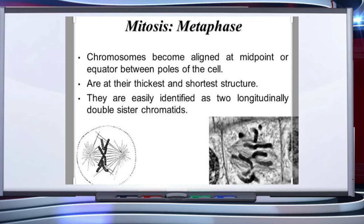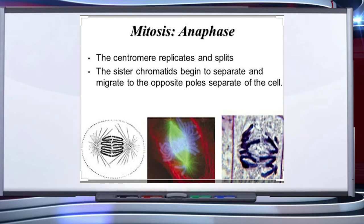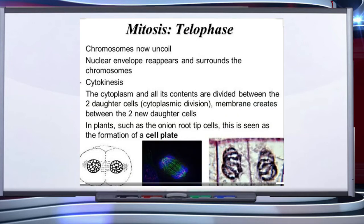Sister chromatids are clearly visible under the microscope. The next phase of mitosis is anaphase. In this phase, the chromosomes split and the sister chromatids begin to separate, migrating to the opposite poles of the cell. At this point, instead of calling them sister chromatids, we refer to them as chromosomes of two different nuclei.